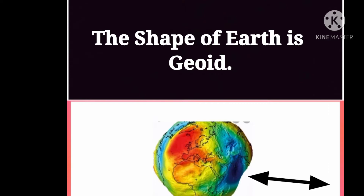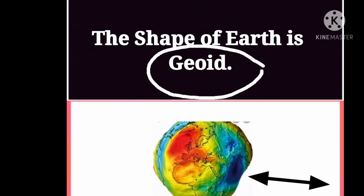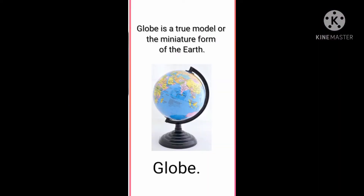Due to its shape, it is called a geoid. Now, what is a globe? The small model of the earth is known as the globe. So, a globe is a true model or the miniature form of the earth.